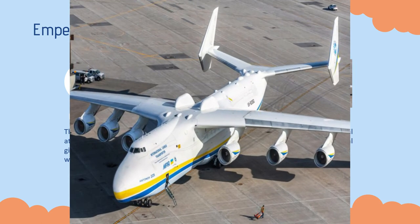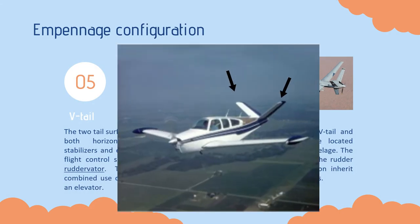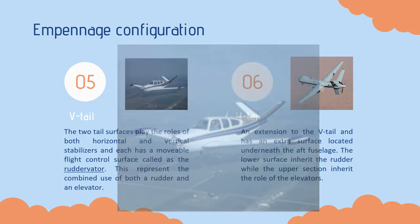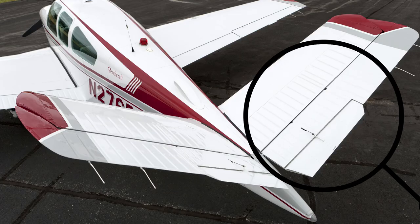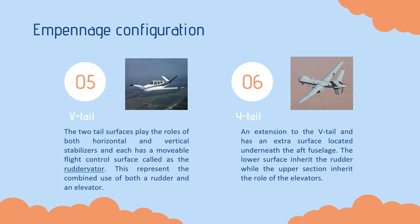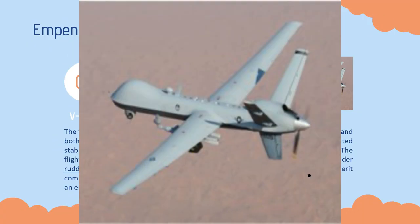The fourth one is the H-tail. It is comprised of one horizontal stabilizer in between two vertical stabilizers. The fifth one is the V-tail. The two tail surfaces play the roles of both horizontal and vertical stabilizers, and each has a movable flight control surface called a ruddervator. This represents the combined use of both rudder and elevator. The sixth one is the Y-tail, which is an extension to the V-tail and has an extra surface located underneath the aft fuselage.